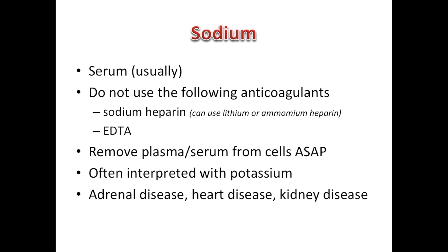For sodium samples, we use serum. We don't want to use sodium heparin or EDTA for sodium, as EDTA can skew the results. Using a red top tube keeps it safe. We should always remove the plasma and serum from the cells ASAP, because lysed RBCs sitting for a period of time could disrupt and change the sodium value in the serum. Sodium is almost always looked at alongside potassium — the sodium-potassium ratio. Adrenal disease like Addison's commonly shows low sodium and increased potassium. Heart disease and kidney disease can also cause changes to sodium and potassium levels.